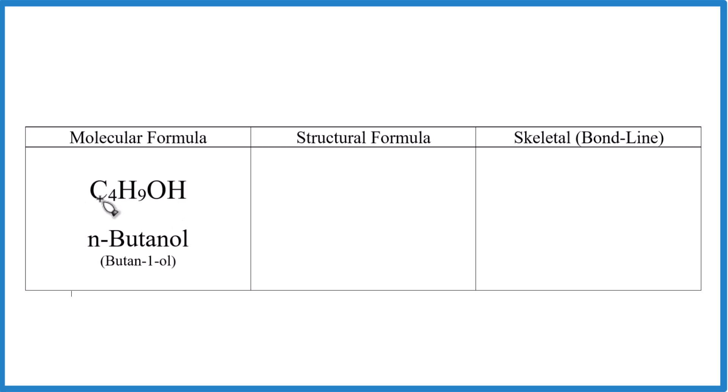So the structural formula will have four carbons, nine hydrogens, and then an OH. And because it's a straight chain, or butan-1-ol, the OH will be on the last one, or on the first one, depending how you think about it.